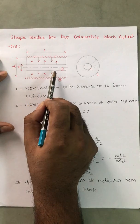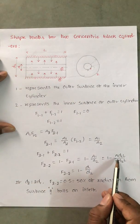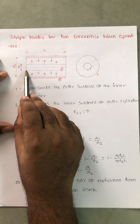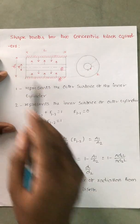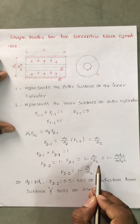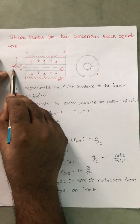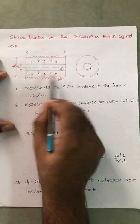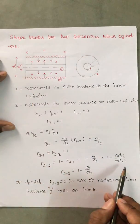We need to consider, in heat transfer - sorry, in radiation especially - we need to consider surface area. Surface area of the inside cylinder is πD into length, πD₁ into L. A₂ is πD₂ into L, the length of the cylinder.